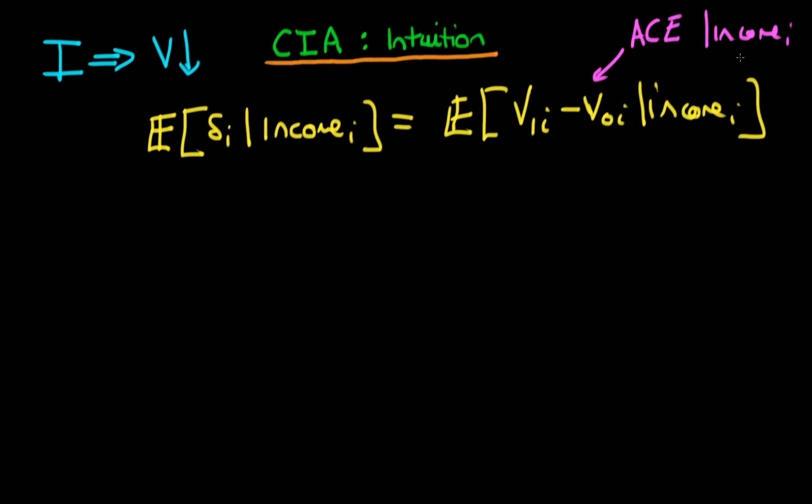And in this video, I just want to provide a little bit of intuition for what exactly we mean by given a district's level of income. So writing it out mathematically, essentially what we have is that V1i and V0i are independent of Di, given a district's level of income. So that's the income of a district i. So what exactly does this mean conditional on the income of a particular district?